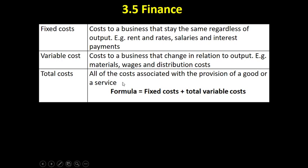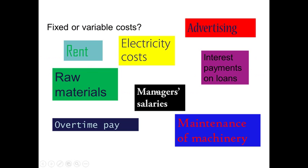Total costs are all of the costs associated with the provision of a good or service. We simply calculate total costs by adding fixed costs to the total variable costs. So those are three different types of costs. You can pause the video and try to put examples into fixed or variable costs.